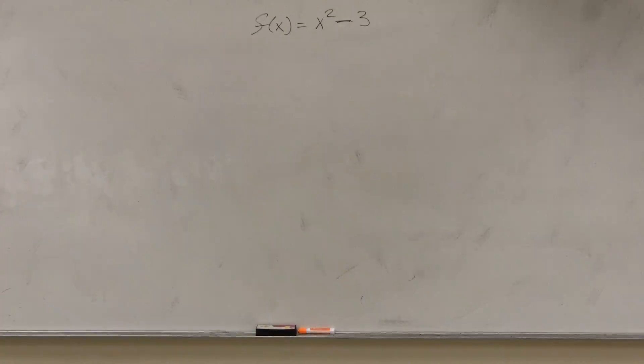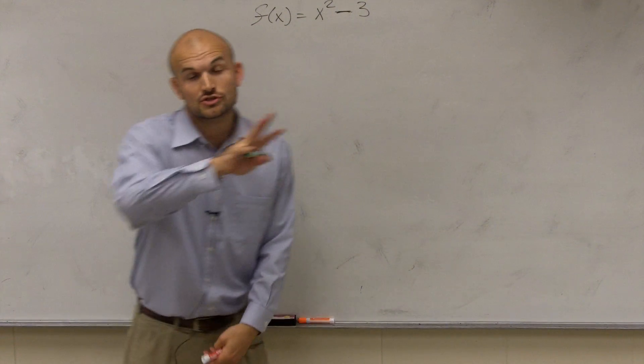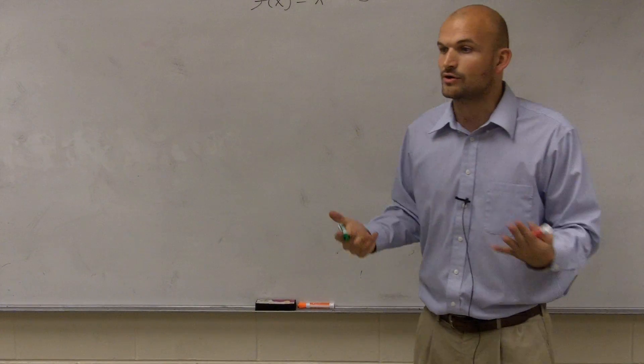If you guys look at it, we have, now we have a function, f of x equals x squared minus 3. So there's three, remember we talked about our four functions. You guys have to know these by name and know what their parent graph looks like.